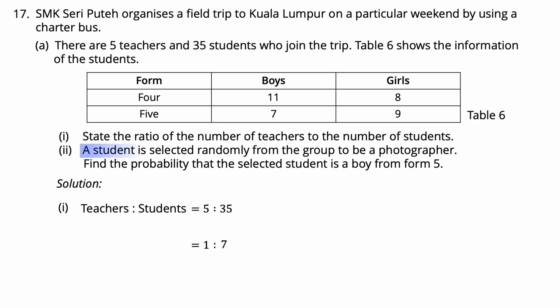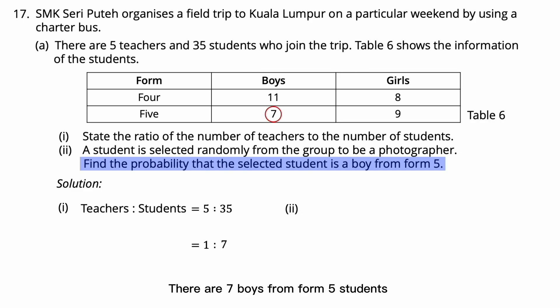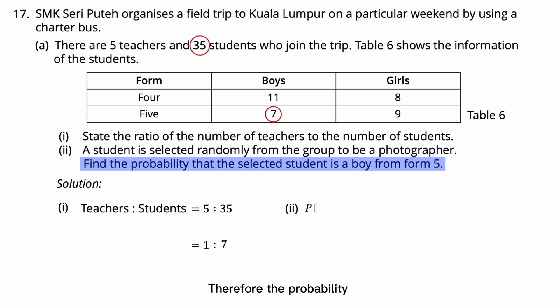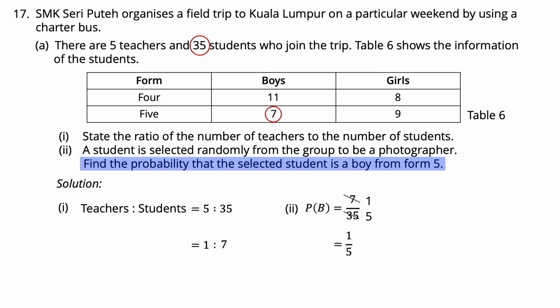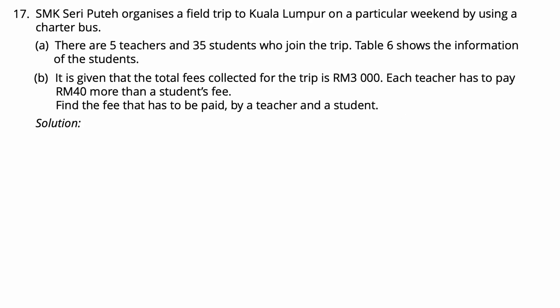Question 17A2: A student is selected randomly from the group to be a photographer. Find the probability that the selected student is a boy from Form 5. There are 7 boys from Form 5 and the total number of students is 35. Therefore, the probability is 7 over 35, which simplifies to 1 over 5.